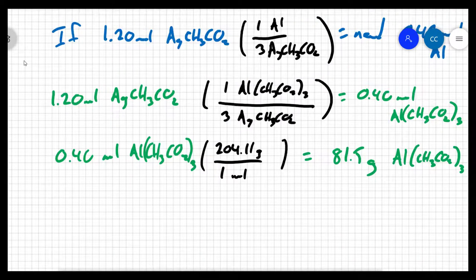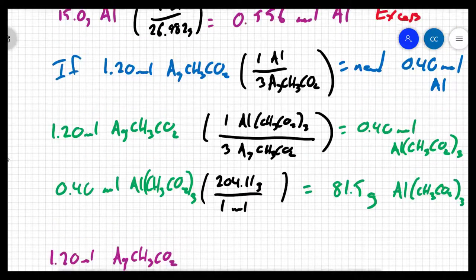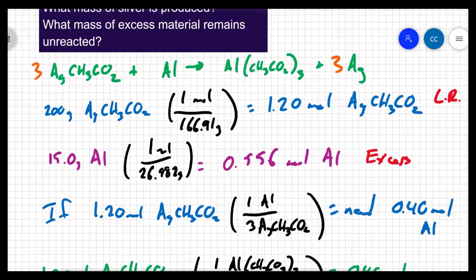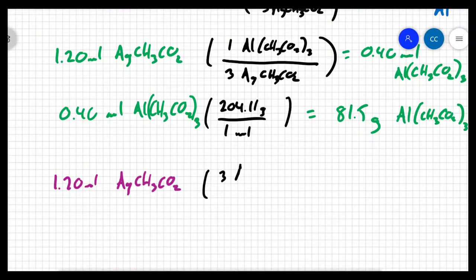So again, I'm going to use my limiting reactant and say I have 1.20 moles of silver acetate. And what's the ratio between the silver acetate and my product? Well, it's a three to three or a one to one ratio. There are three silvers for every three silver acetates, which means I'm going to make 1.2 moles of silver.